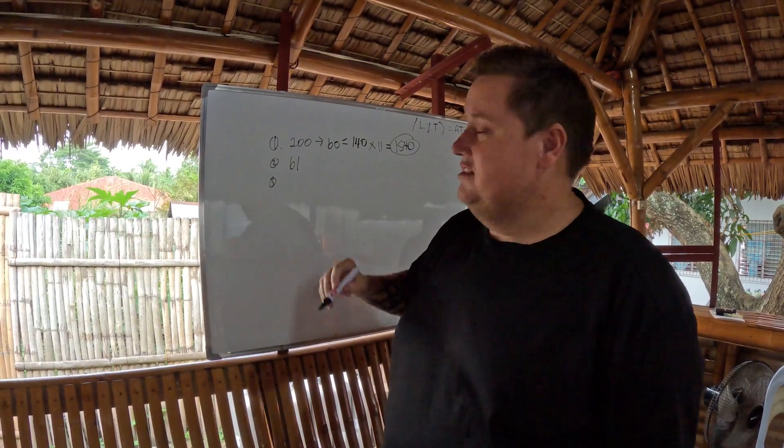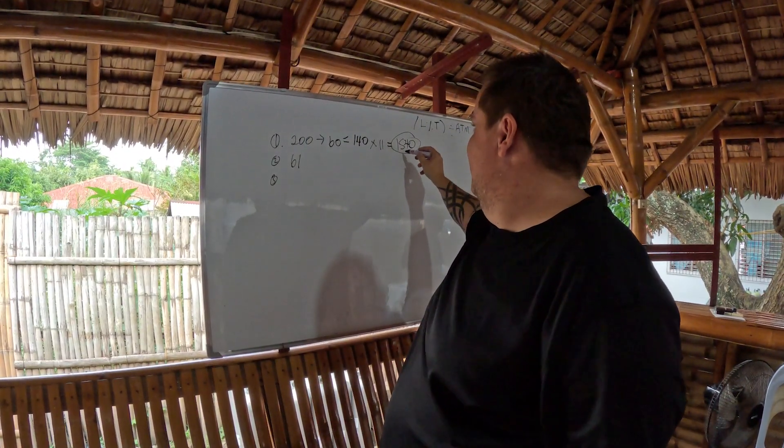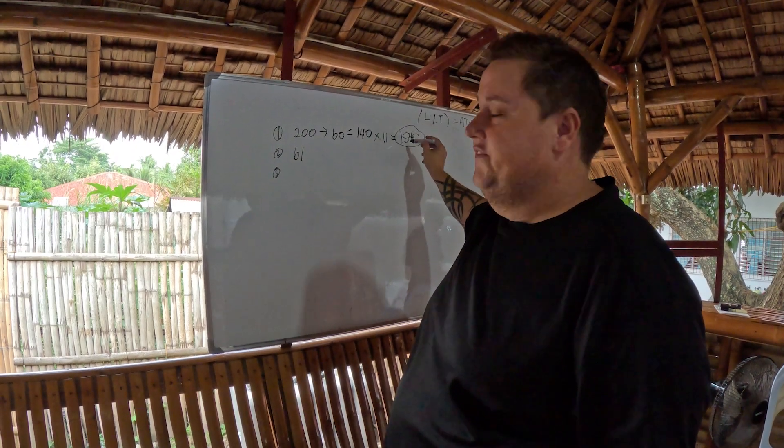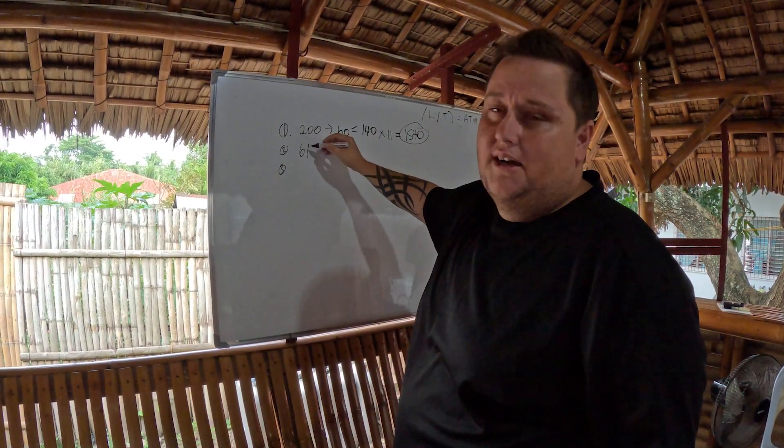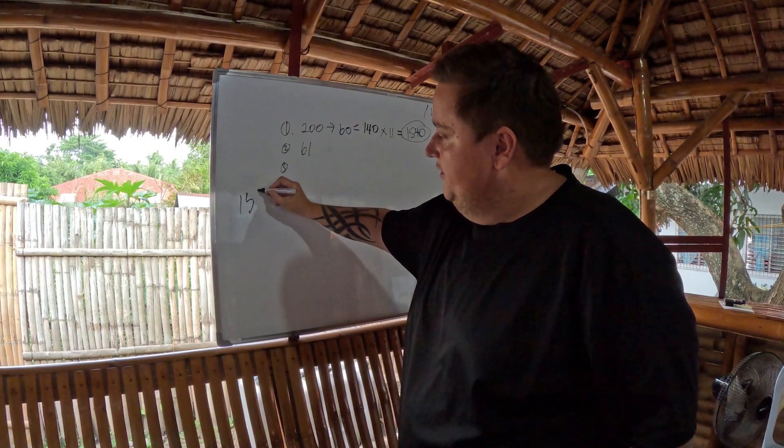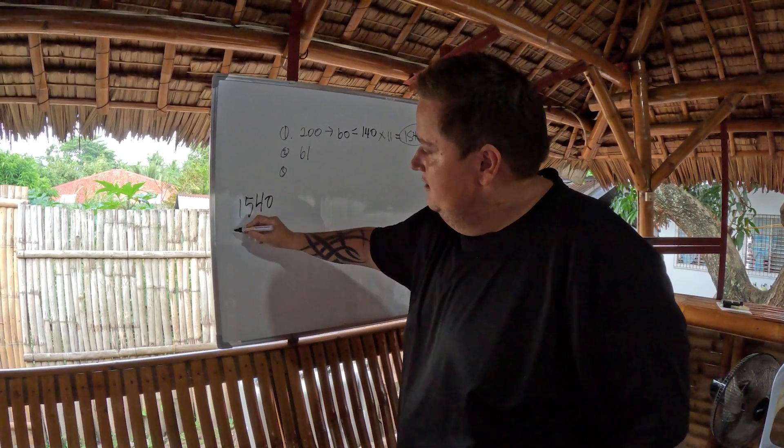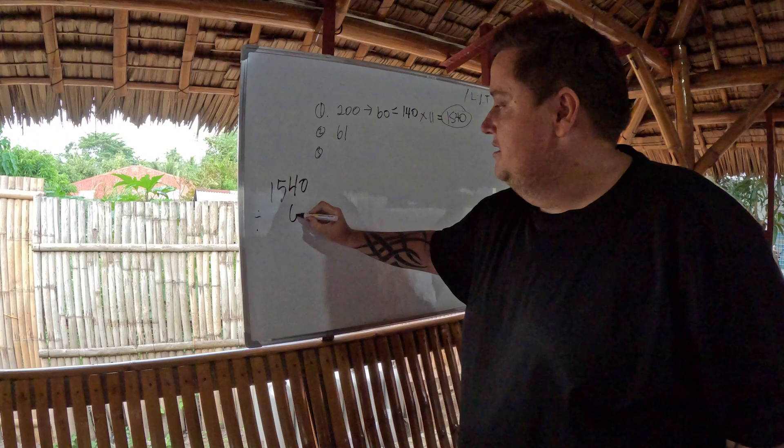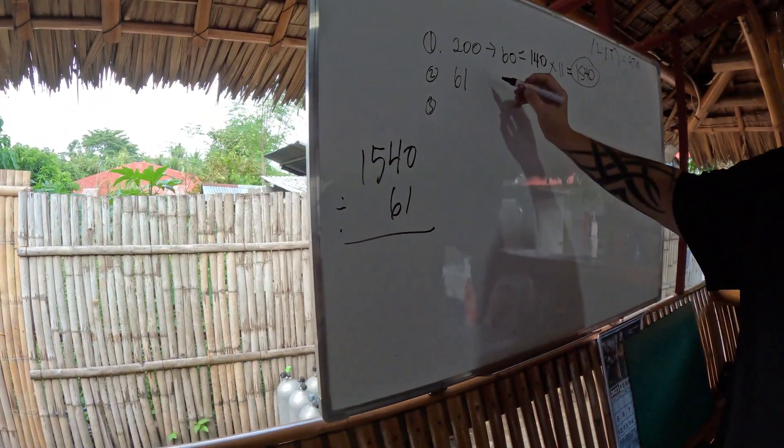So what I'm going to do first, I'm going to take 1540 and divide it by 61. So 1540 divided by 61, it comes out to 25.24.